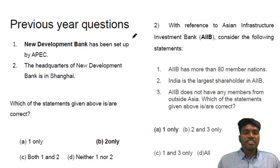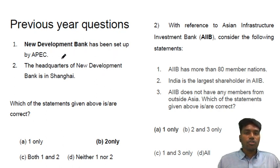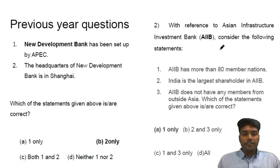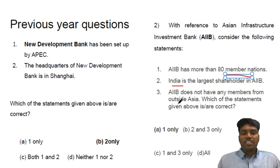Each of its members has only one vote, and there is no veto power. Previously, UPSC has asked questions from multilateral institutions. There was already a question on the New Development Bank — the NDB was set up by APAC, which is wrong; it is BRICS. Its headquarters is in Shanghai. In 2019, they asked about the Asian Infrastructure Investment Bank — about its members, who is the greatest stakeholder, and from which regions members come. These are the areas you will focus on during revision.